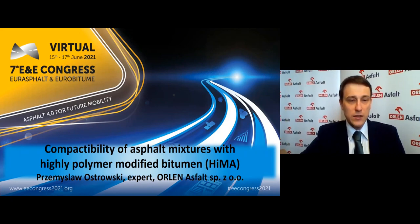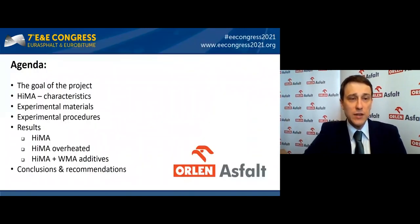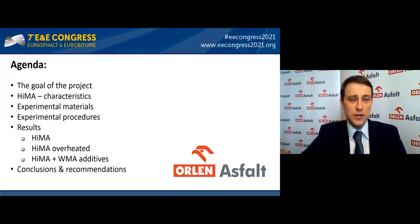The paper was prepared in the asphalt research and development department. The presentation agenda covers: the goal of the project, HIMA characteristics, experimental materials and procedures, results in three variants, and conclusions and further recommendations. The goal of the project was to determine the optimum compaction temperature for mixtures containing PMB HIMA bitumen, examine the impact of high production temperature and overheating of HIMA bitumen, and examine the impact of WMA additives on PMB HIMA bitumen.